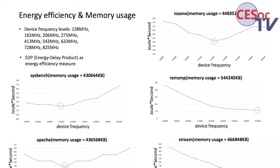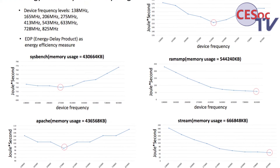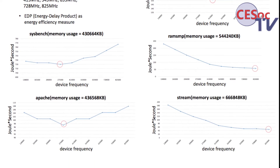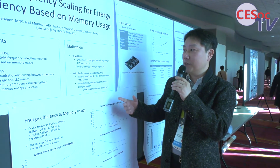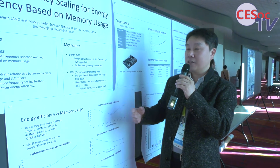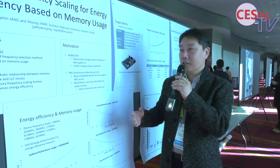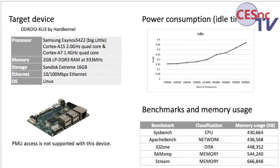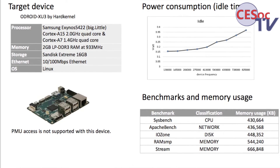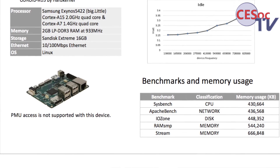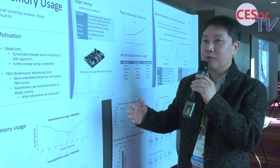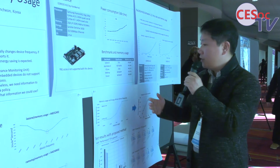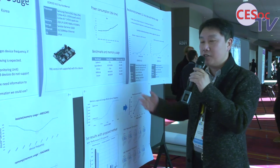In this paper, we propose a new policy for DRAM frequency selection. To do this, we need to access the PMU, but in many embedded devices PMU is not supported. Our target device is one such device that does not allow access to the PMU, so we do not know how many times the memory is accessed.